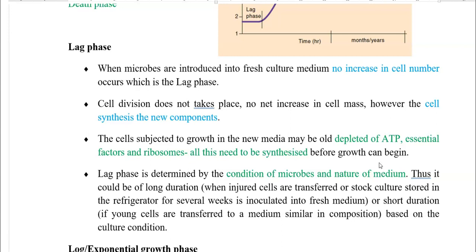The duration of the lag phase is determined by the condition of the microbes and the nature of the medium used. It can be of long duration when injured cells are transferred, or when stock cultures stored in the refrigerator or at -80°C freezer for several weeks are inoculated into a fresh medium. The lag phase may be short when young cells are transferred to a medium similar in composition to that in which they were previously grown.